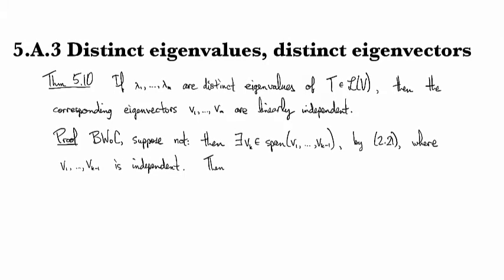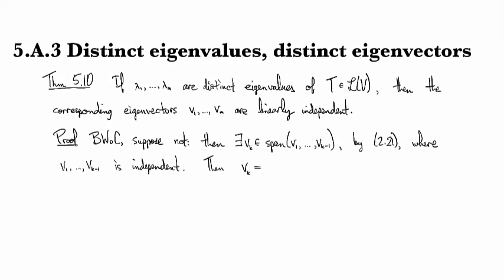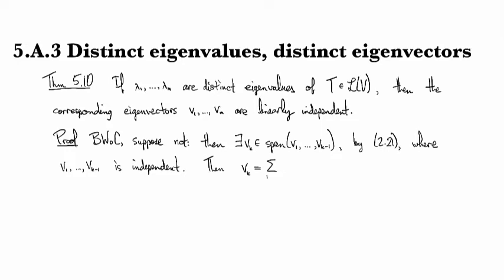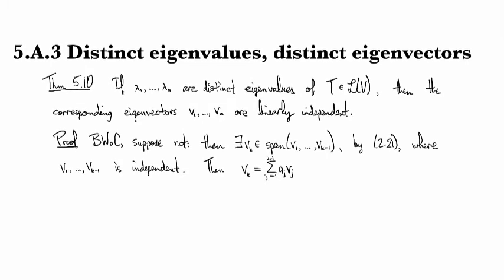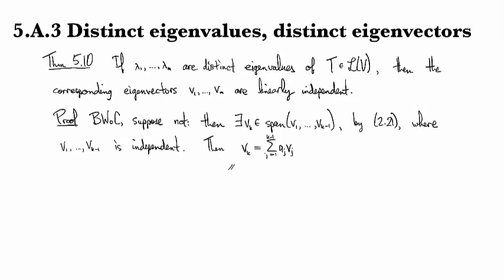Since it's in the span, we have that v_k looks like a linear combination: sum from j equals 1 to k minus 1 of a_j v_j. On the one hand I can apply T.